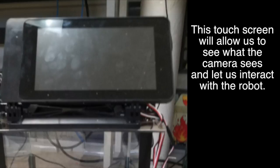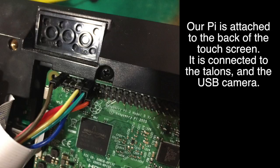This touchscreen will allow us to see what the camera sees and let us interact with the robot. Our Pi is attached to the back of the touchscreen. It is connected to the talons and the USB camera.